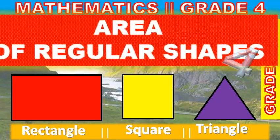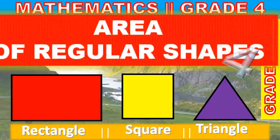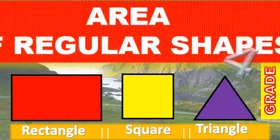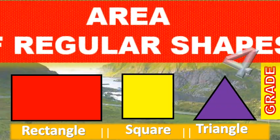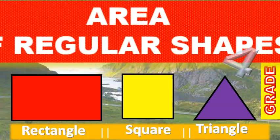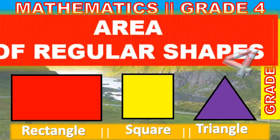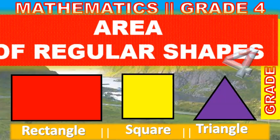The next regular shape is the square. How do we calculate the area of a square? All the sides of a square are equal. Therefore, I shall take just two sides and multiply them.